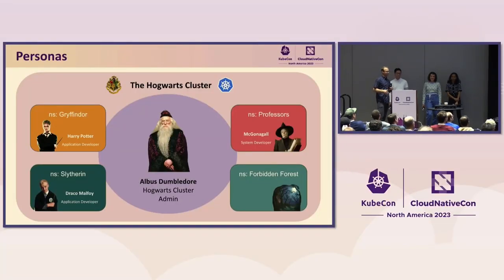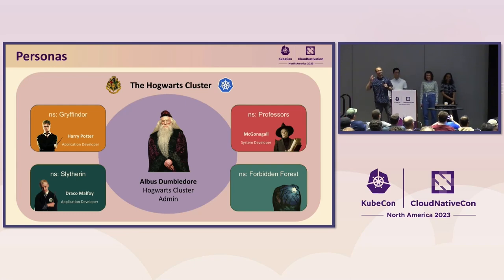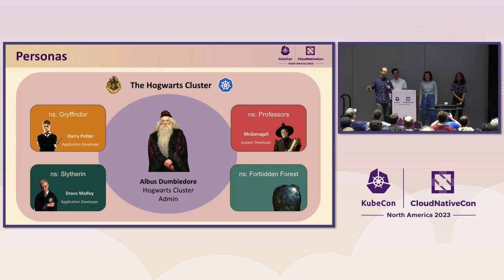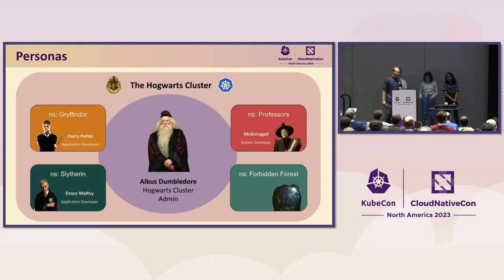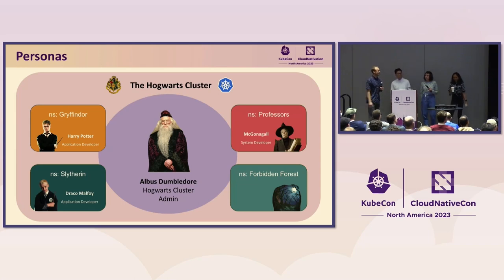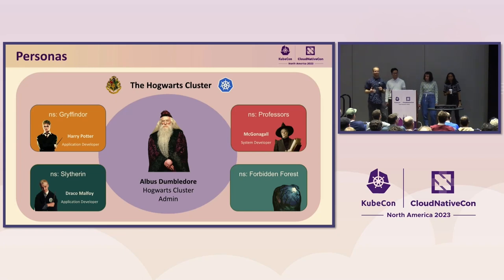We're really excited today to go into a little Hogwarts story. For today, we're going to have a Hogwarts Kubernetes cluster. At the head of that Kubernetes cluster is going to be Albus Dumbledore — he's going to be our cluster admin. We're going to be telling this story from the bottom up, from the perspective of the cluster admin. It's going to be really important to remember throughout the entire story.